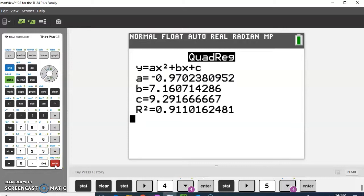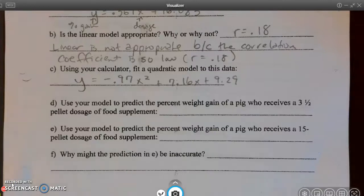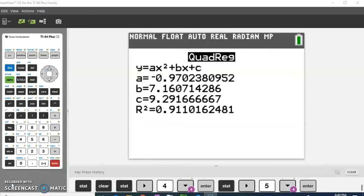And that gives me my a, b, and c values. Let's round to two decimal places. All right. So I fit a quadratic model to the data. y equals negative 0.97x squared plus 7.16x plus 9.29. I want to go back to the calculator. And I want you to notice there is no correlation coefficient. There is simply an R squared value. That's because a quadratic both increases and decreases. Correlation coefficients tell us if it increases or decreases and how well the exponential or linear model fits it. Well,